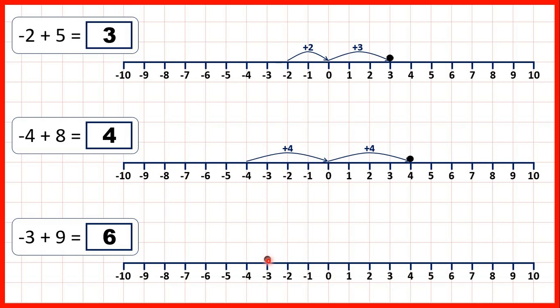Or from minus 3 we could add 3 to get to 0, and then add another 6, because if we add 3, and then add 6, we've added 9 altogether. And again 9 minus 3 gives us the same answer as minus 3 plus 9.